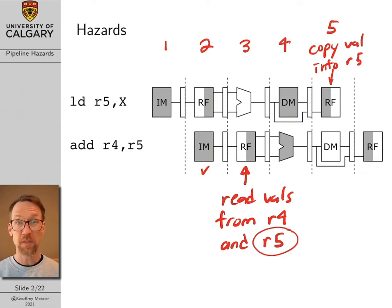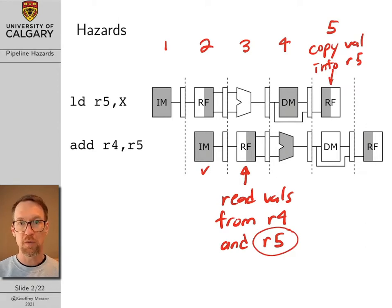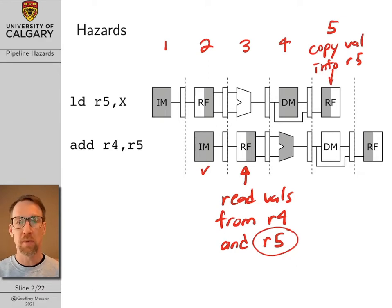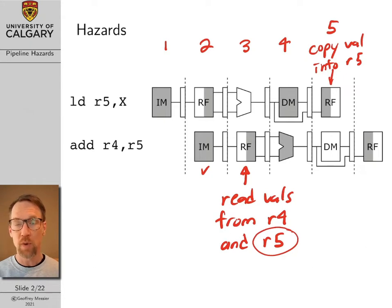This is basically the definition of a pipeline hazard. It occurs when we're trying to use a register, or region in memory, that hasn't yet been updated from a previous command because it's still winding its way through the pipeline.